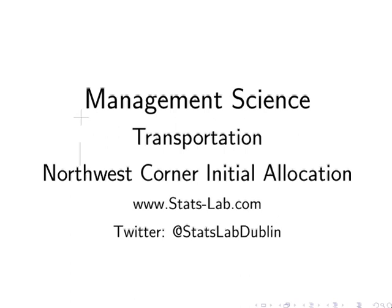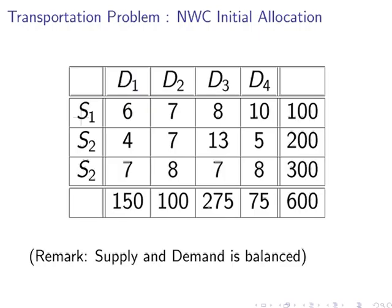In this presentation we're going to look at transportation, and in particular, the northwest corner initial allocation on a transportation tableau. This is quite a detailed amount of information and it's usually what comes up in exam papers. We have these values in the cells, for example 6, 7, 8, and 10, and we have these values at the end of the rows and at the end of the columns: 100, 200, 300.